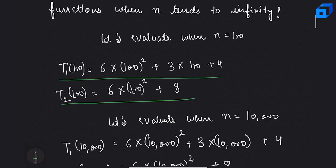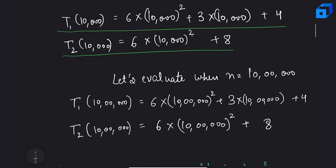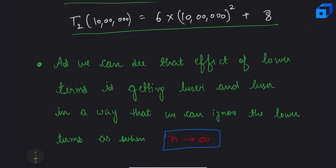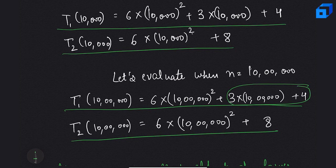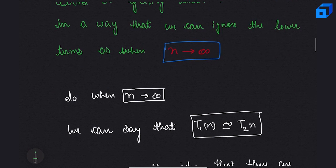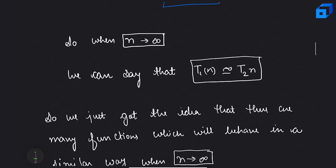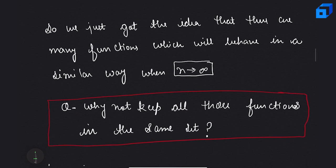When n = 100, n = 10,000, and n = 1,000,000, we see that the effect of lower-order terms gets smaller and smaller. We can essentially ignore lower terms as n tends to infinity — these terms have no effect when n = 1,000,000. So we can say that when n tends to infinity, T1(n) is approximately equal to T2(n).